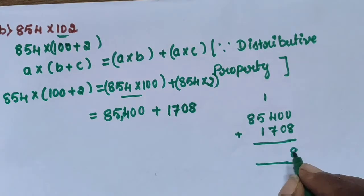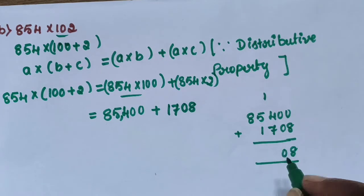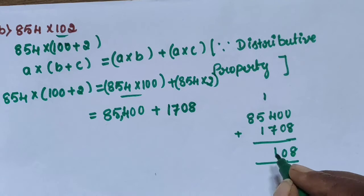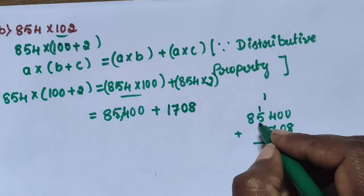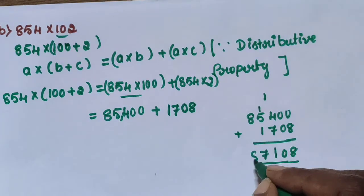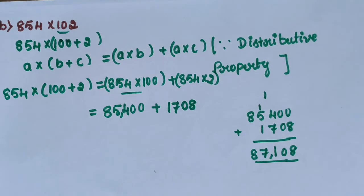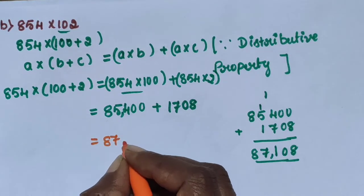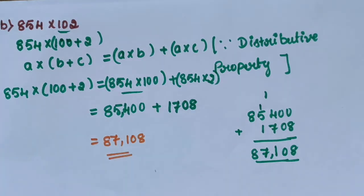Adding 85,400 plus 1,708: 0 plus 8 is 8; 0 plus 0 is 0; 4 plus 7 is 11, write 1 carry 1; 1 plus 5 is 6, plus 1 is 7; 8 plus 0 is 8. The answer is 87,108.